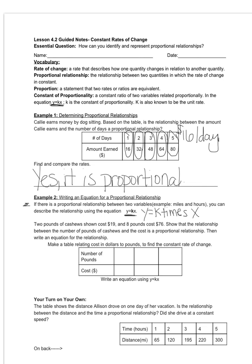So if I know that two pounds of cashews cost $19, I want to figure out how much does one pound of cashews cost? So I'm looking at the cost per pound, which tells me that I'm going to take my cost divided by my number of pounds.